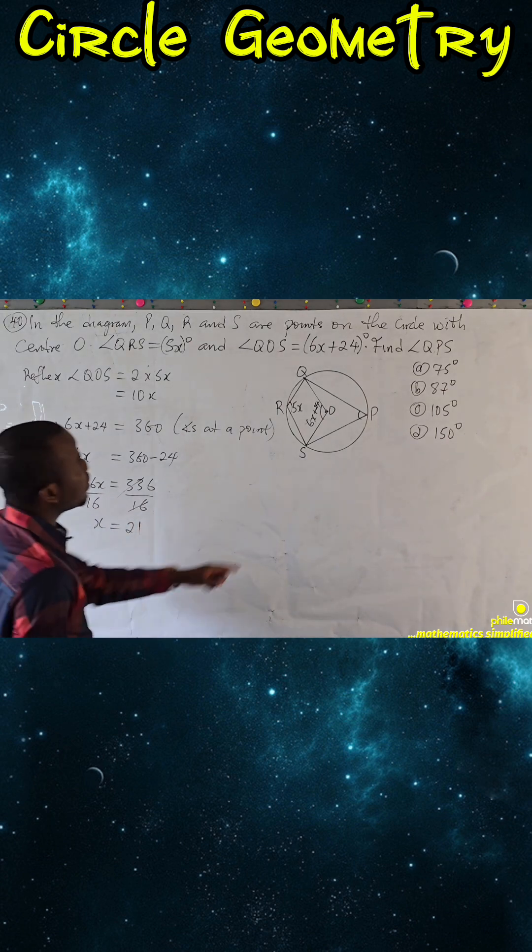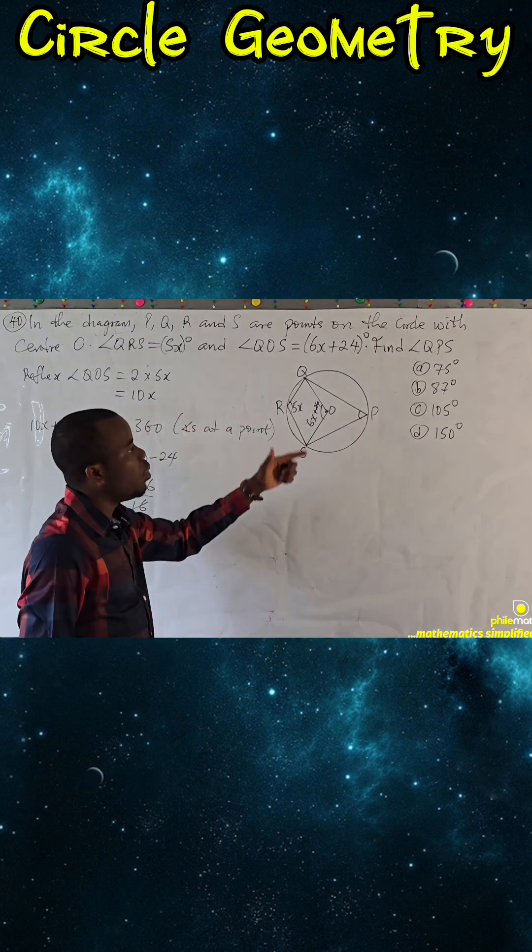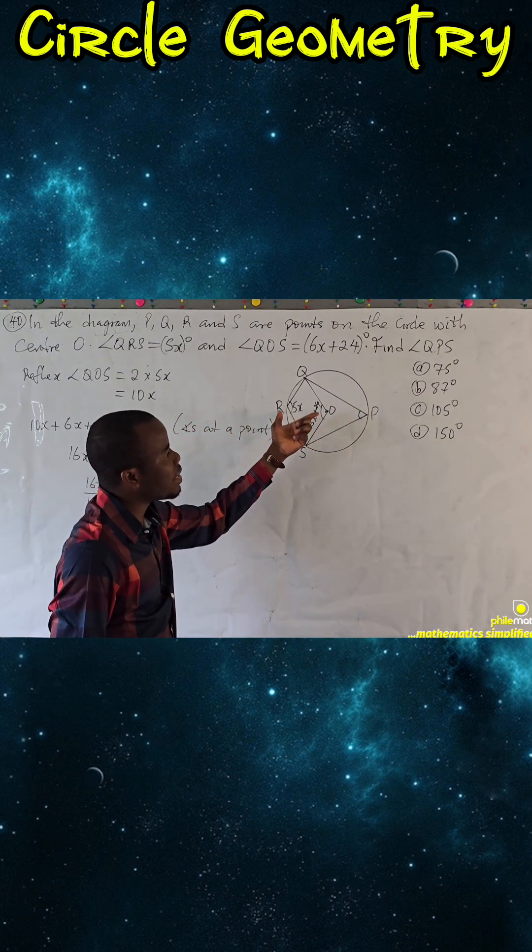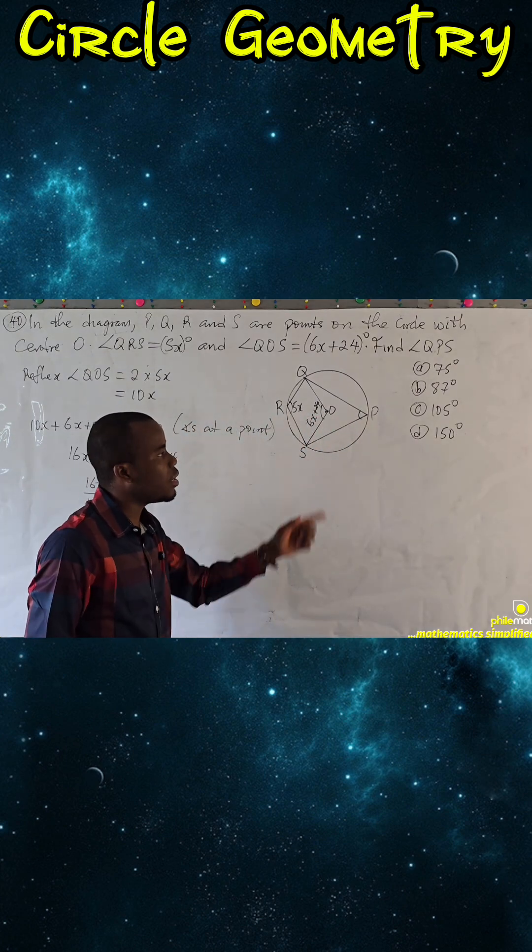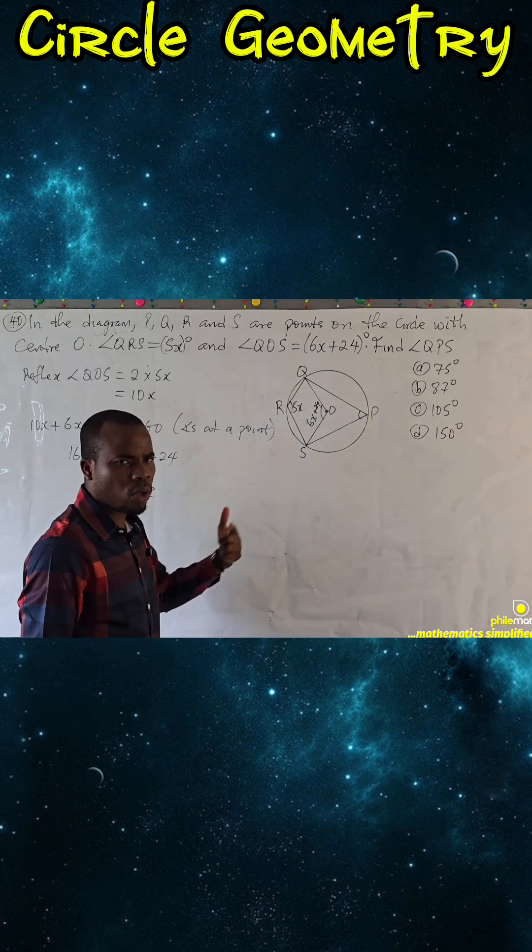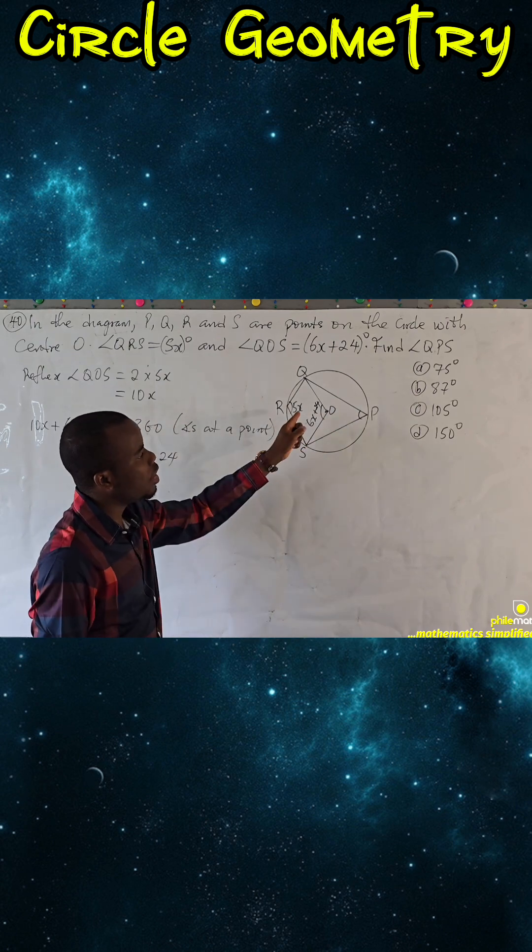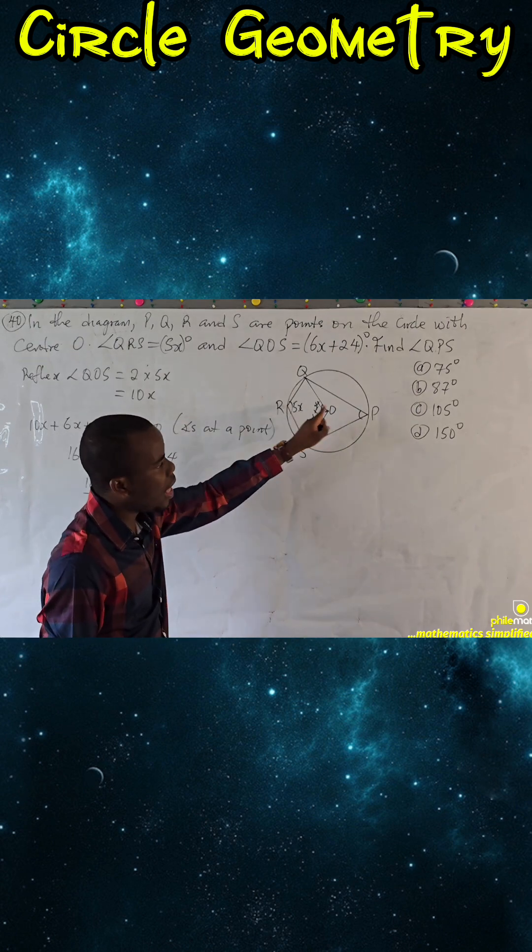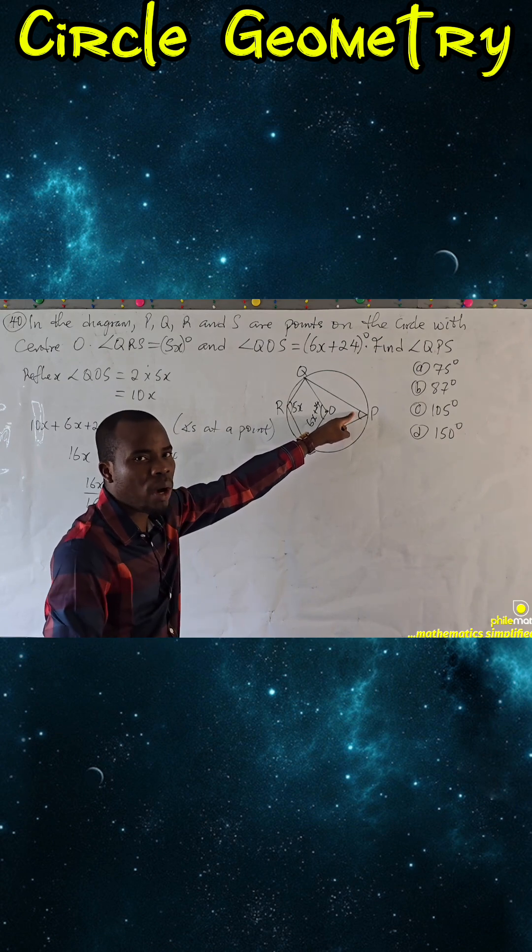Now what are we looking for? This angle QPS. We know that opposite angles of a cyclic quadrilateral are supplementary. These two angles are supplementary. What does that mean? It means if you sum this angle and this angle, it should give you 180.